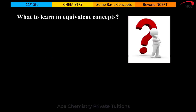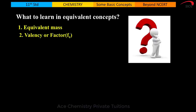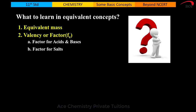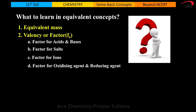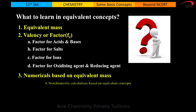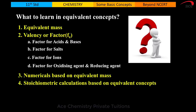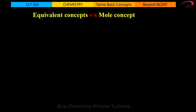Easier numericals are done by mole concept. In equivalent concept, we will learn: equivalent mass, what is valency or n-factor, how to find out n-factor for acids or bases, how to find out n-factor for salts, how to find n-factor for ions, how to find n-factor for oxidizing agent and reducing agent, how to attempt numericals based on equivalent mass, and stoichiometric calculations based on equivalent concept.